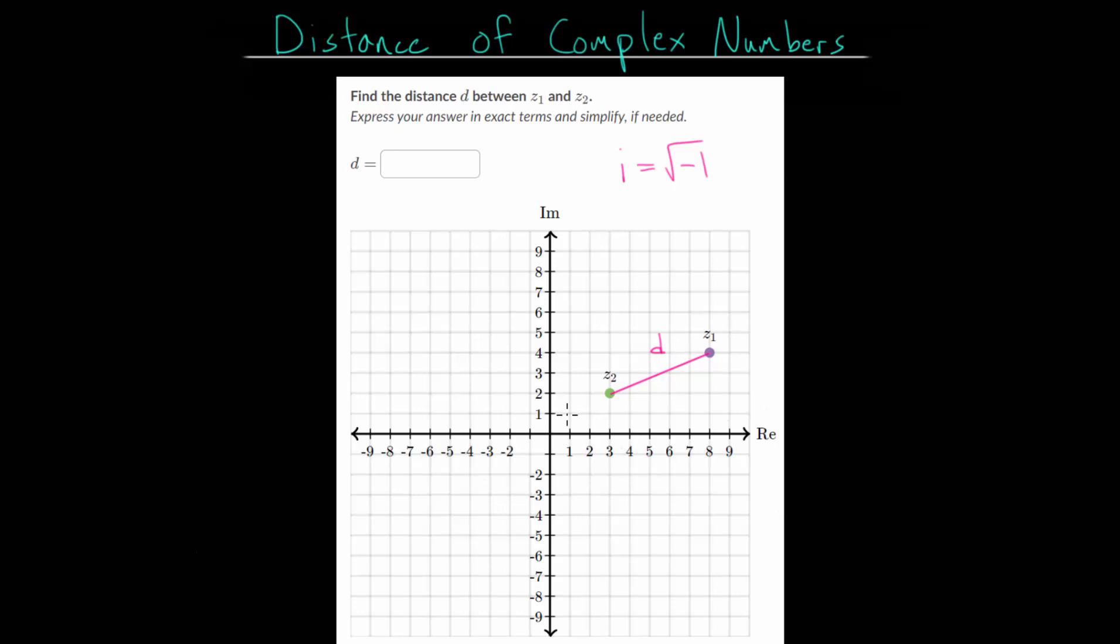With complex numbers, remember that they have a real part and an imaginary part. For instance, Z2 can be written as having a real part of 3 and an imaginary part of 2i. So Z2 is 3 plus 2i, where we usually write the real part first and the imaginary part second. For Z1, it has a real part of 8 and an imaginary part of 4. So Z1 is 8 plus 4i.